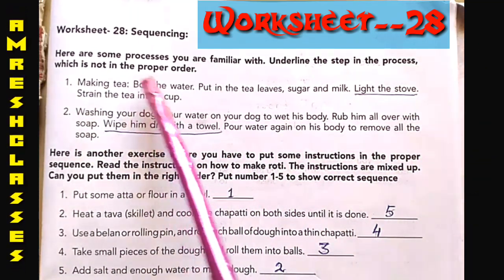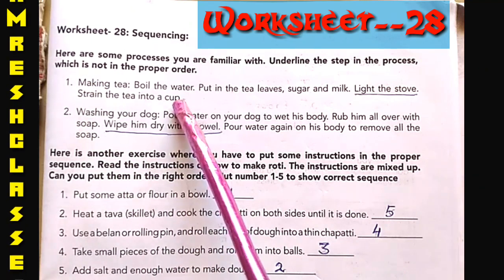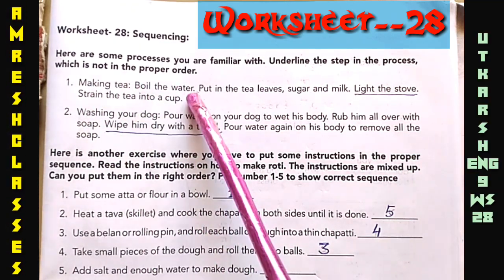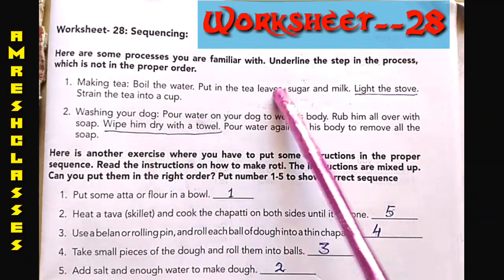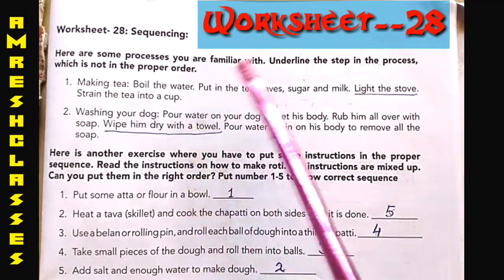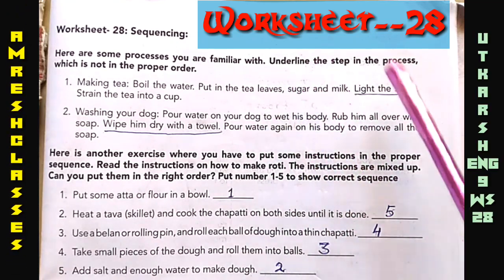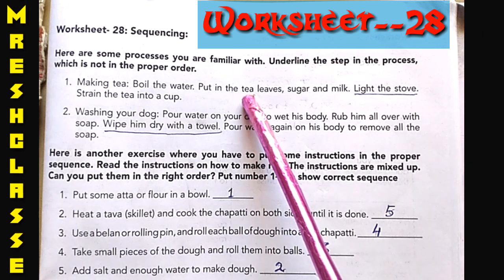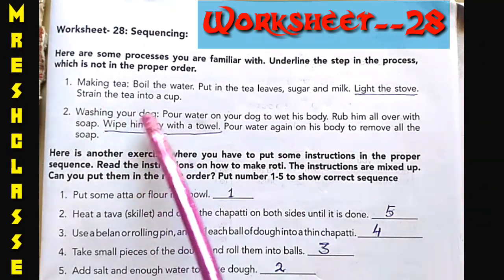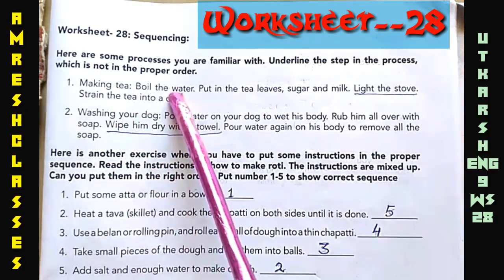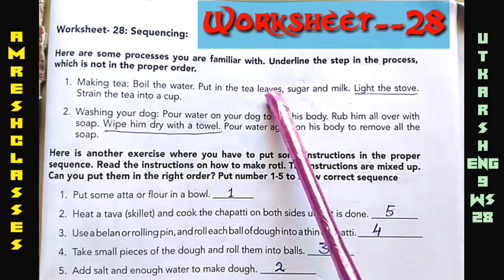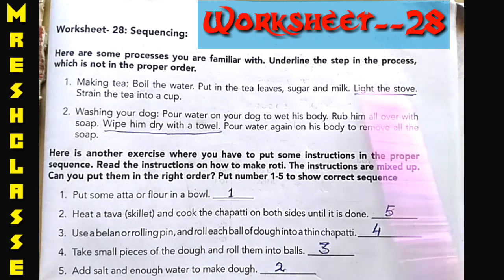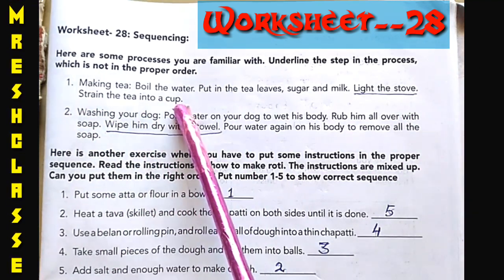Making tea. The steps given are: boil the water, put in the tea leaves, sugar and milk, light the stove, strain the tea into the cup.